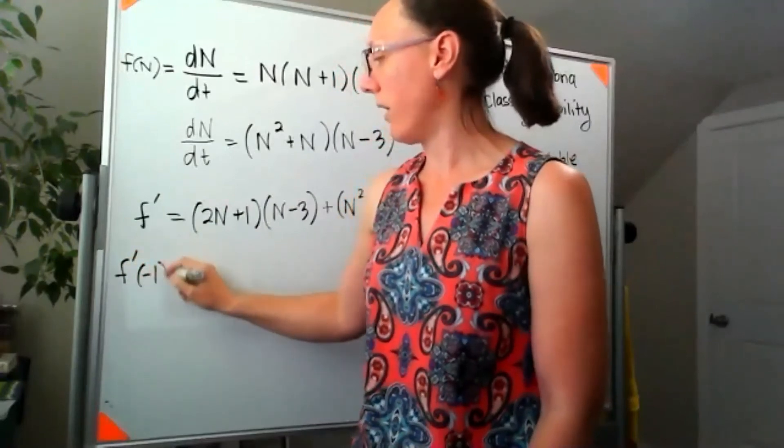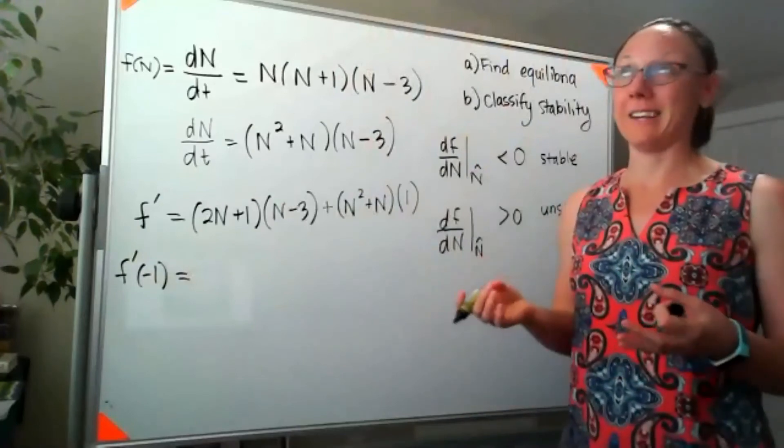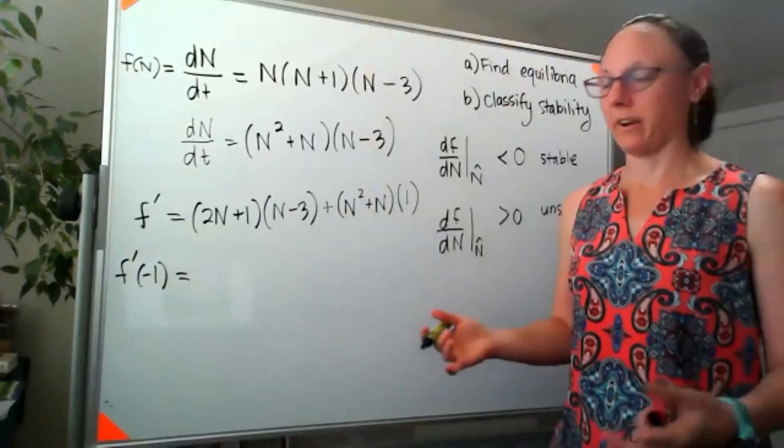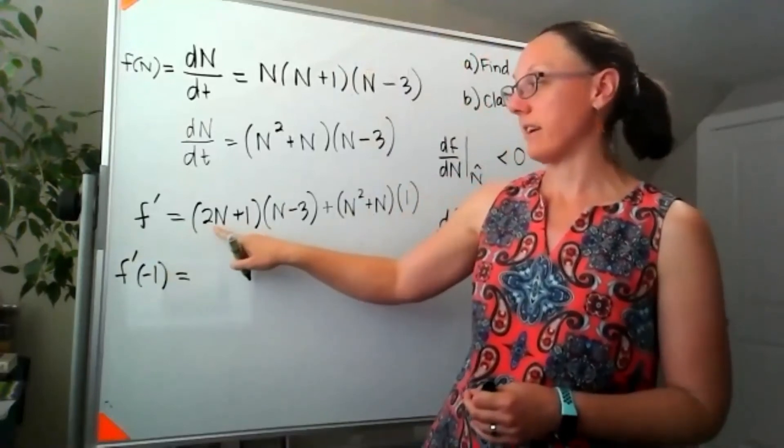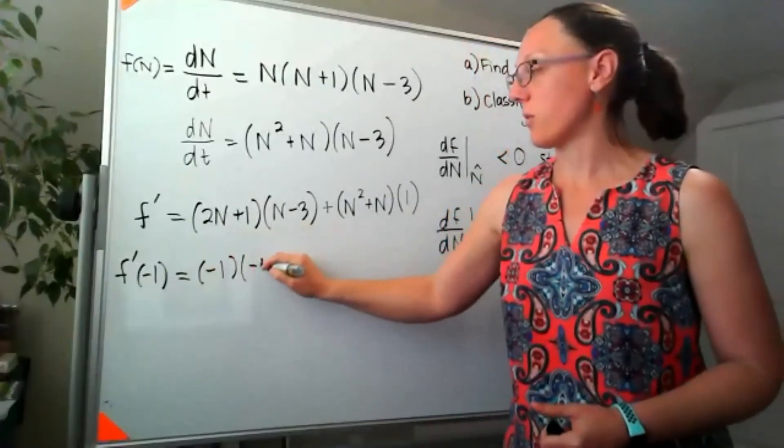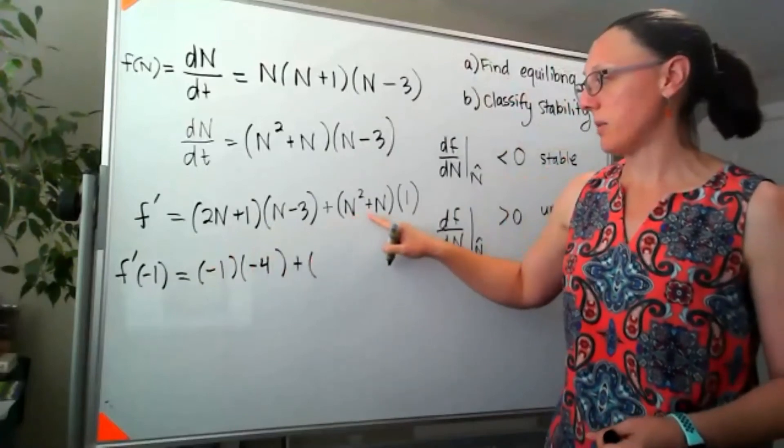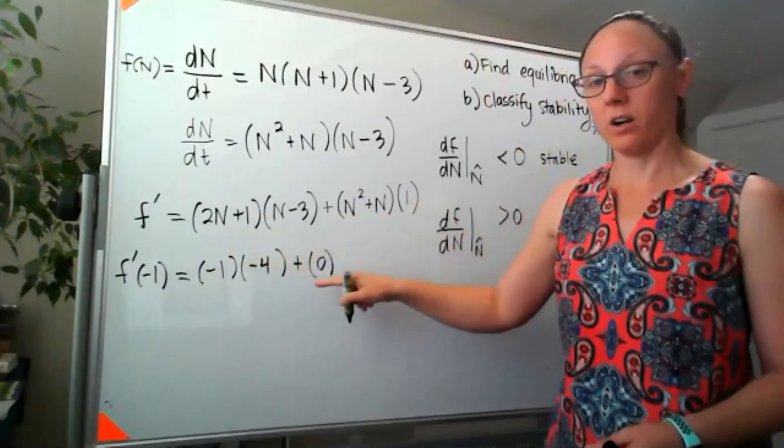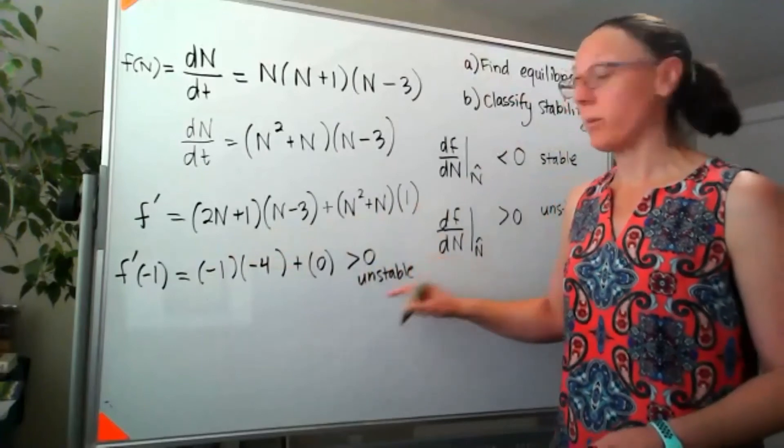So if I check negative 1, remember we don't actually care about the, we don't care about necessarily the value, we just care about whether it's positive or negative. So when I plug in that negative 1, 2 times negative 1, that's negative 2 plus 1, so that's still a negative 1. Negative 1 minus 3, negative 4. Negative 1 squared is 1 plus negative 1, I guess that's going to 0. So I get positive 4, which would make this greater than 0, and unstable, which matches what we got before.